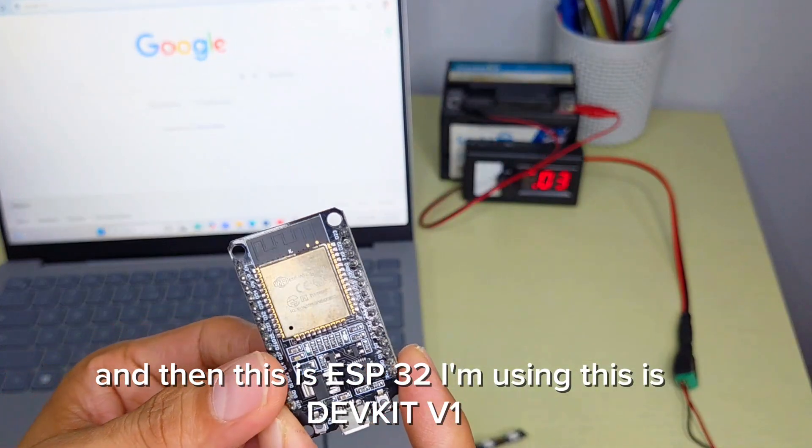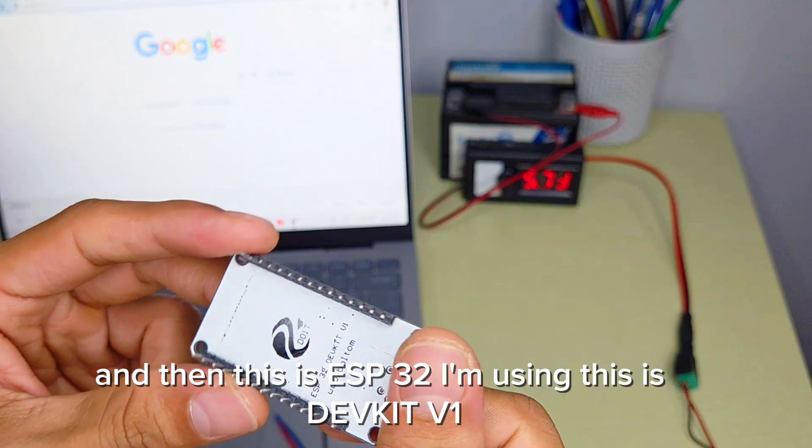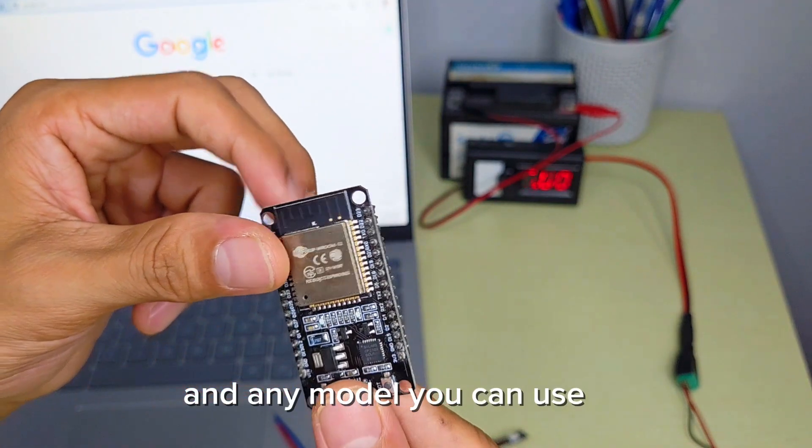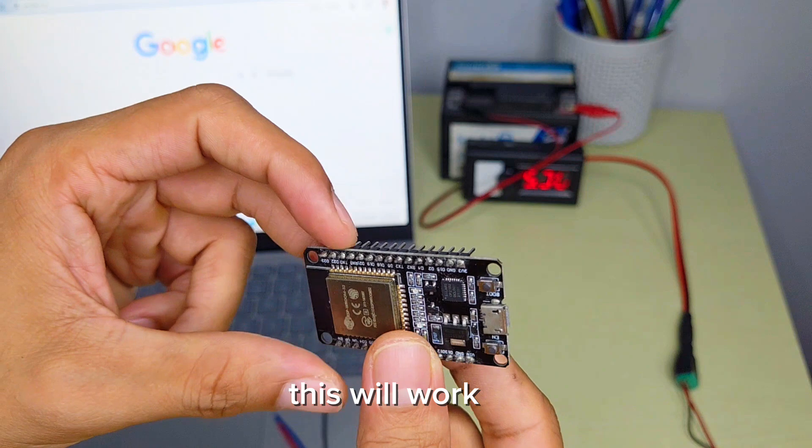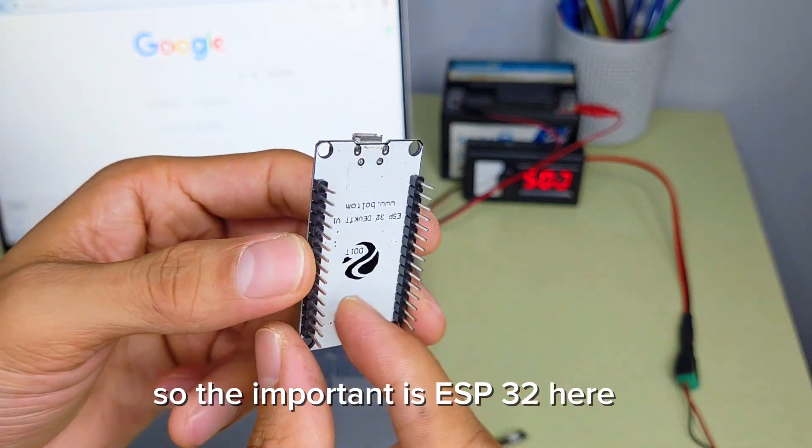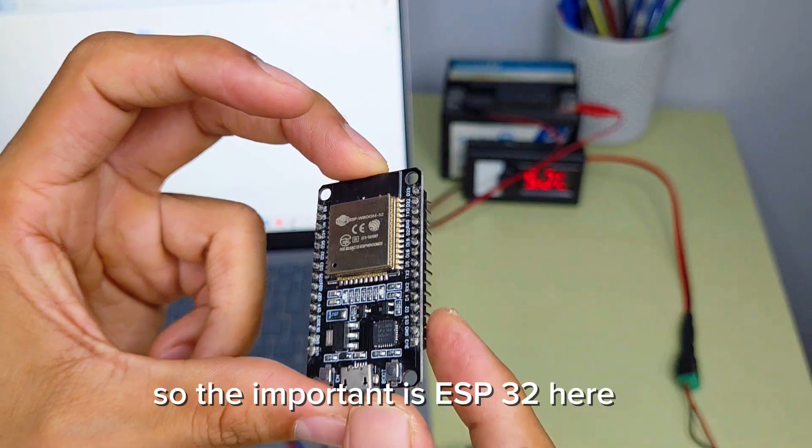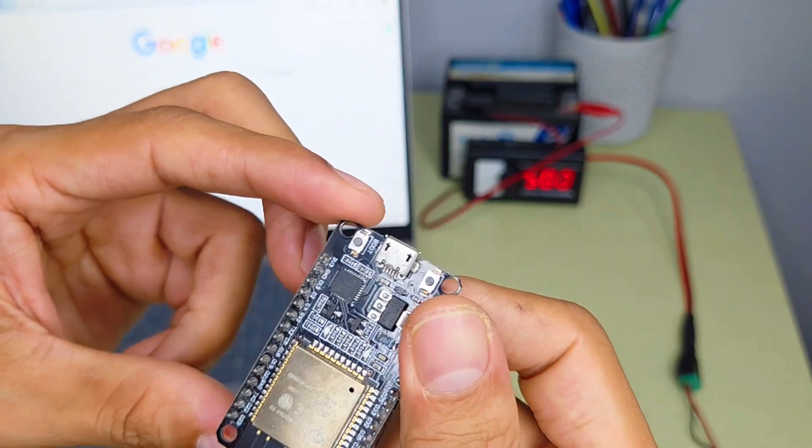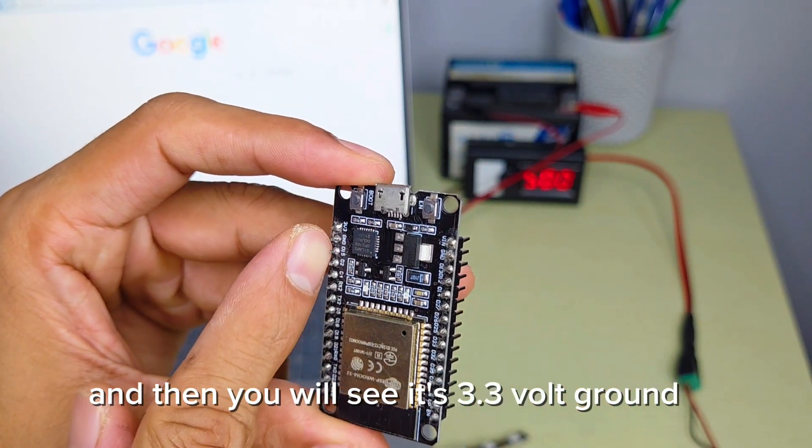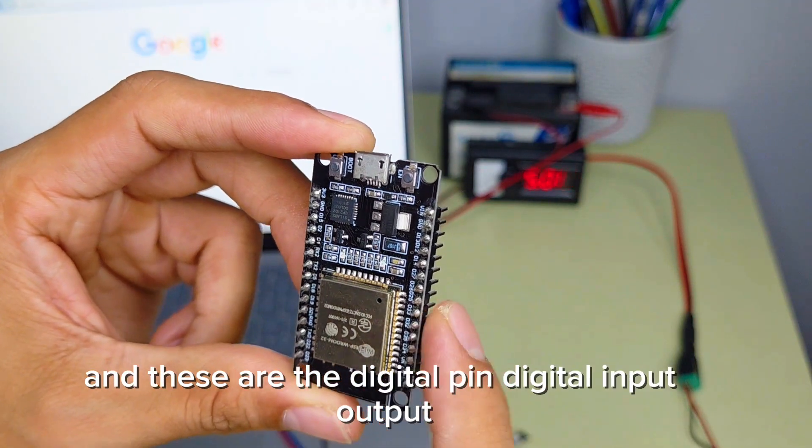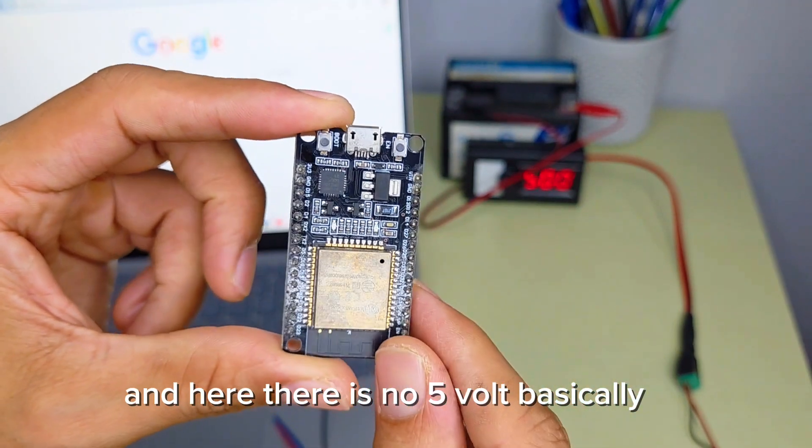This is ESP32. I'm using DefKey V1 and any model you can use will work. You will see a lot of pins here including 3.3 volt, ground, and digital pins for digital input output. There is no 5 volt basically.